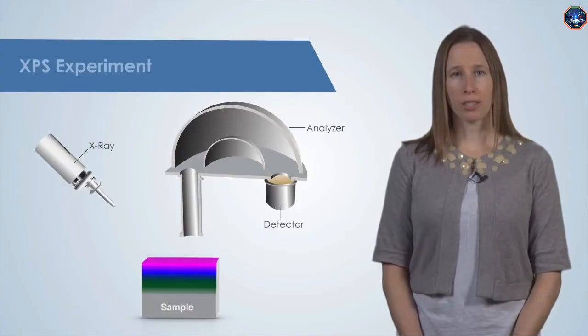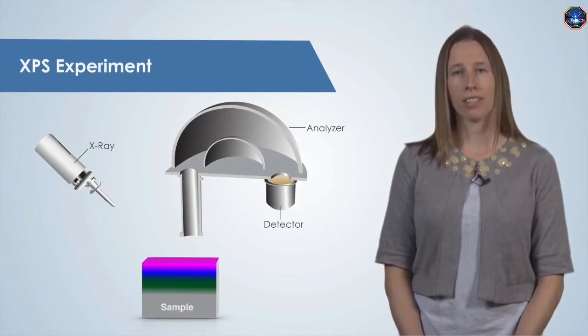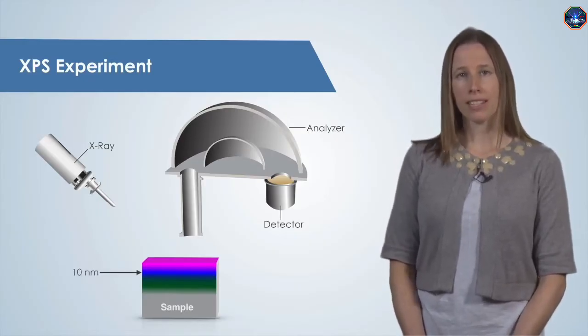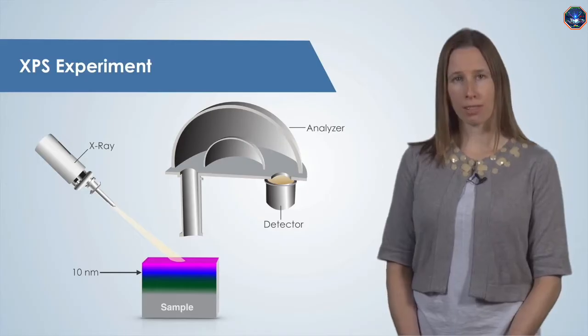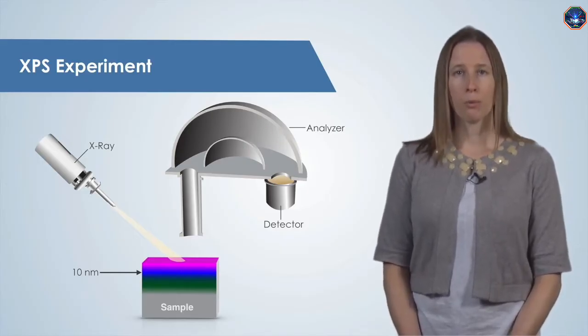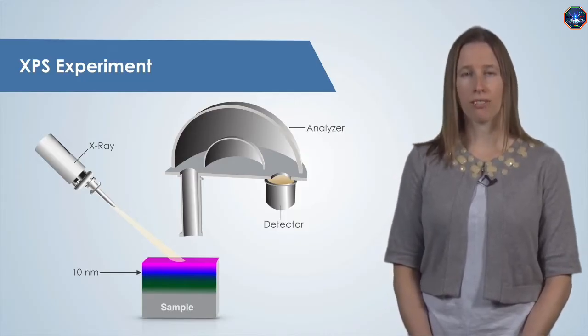X-ray photoelectron spectroscopy, or XPS, can tell us about the surface chemistry of the top 10 nanometers of a sample. The basic idea is that we will hit the sample with X-rays, which will knock electrons out of the sample. We'll measure the energy of these electrons to determine the composition of the surface.